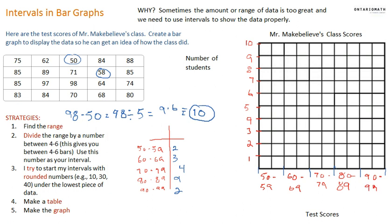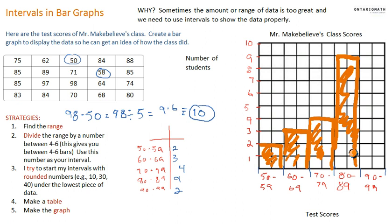And I just take that information out and I make a bar graph out of it. So 50 to 59, how many students? There's two. You would use a ruler. I don't have a ruler on the tablet. 60 to 69, there are three. And 70 to 79, there are four. And 80 to 89, there's nine. And 90 to 99, there's two. Two's right here.